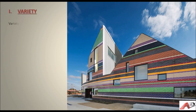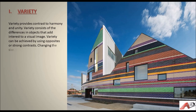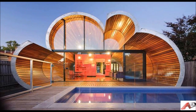Variety provides contrast to harmony and unity. Variety consists of the differences in objects that add interest to a visual image. Variety can be achieved by using opposites or strong contrasts. In this image you can see how contrasting colors give a sense of aesthetic. Breaking a repeating pattern can also enliven a visual image, and here again we see a sense of contrast.